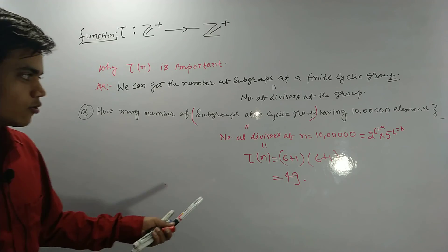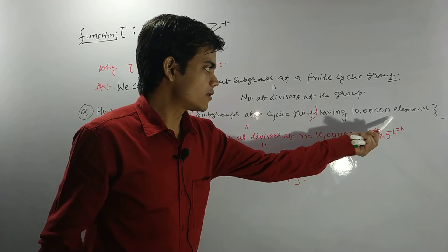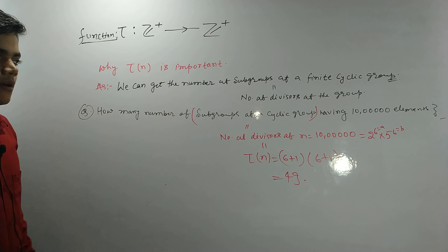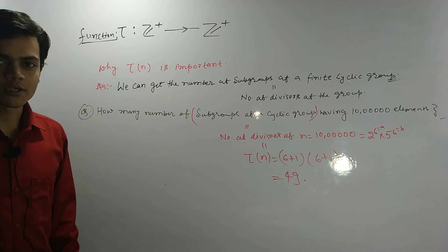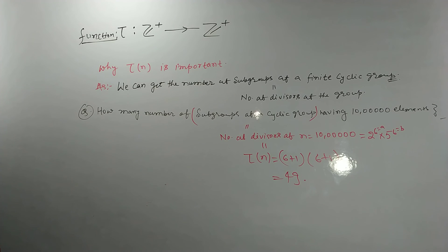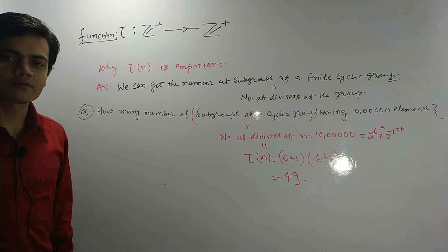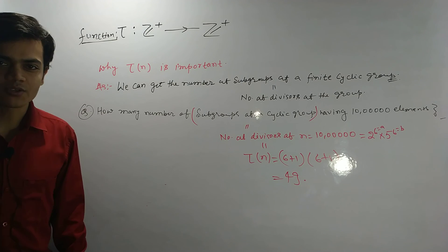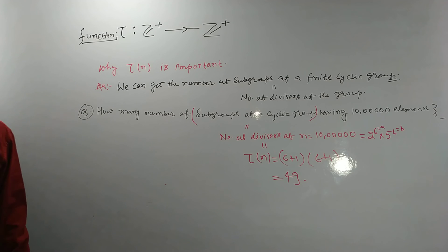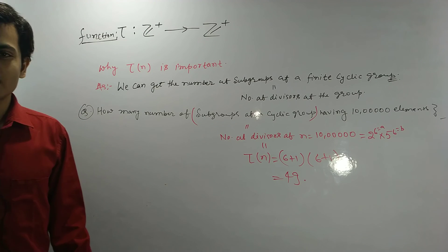So there are 49, there would be 49 number of subgroups of a cyclic group having order 10 lakh. Alright, so this was the Tau function, which is very important. Alright, so we will meet in the next video lecture with some more functions like phi functions or sigma functions. What they give is very important. Till then, take care, bye bye.